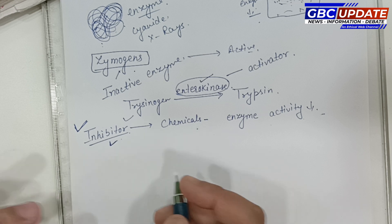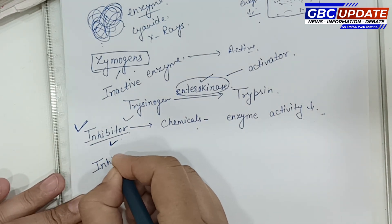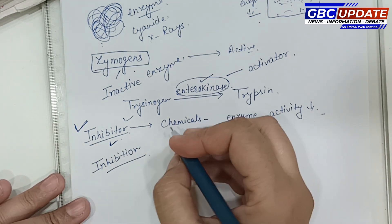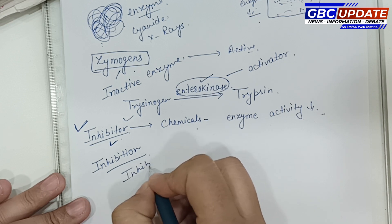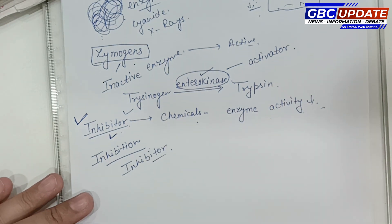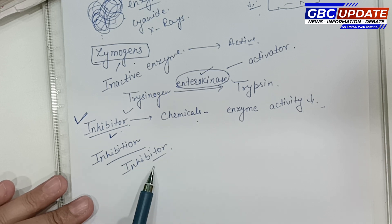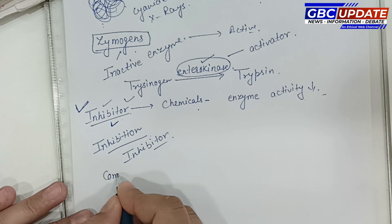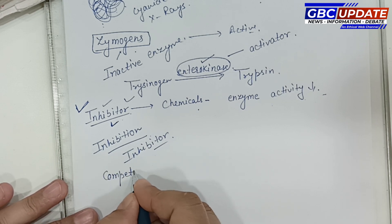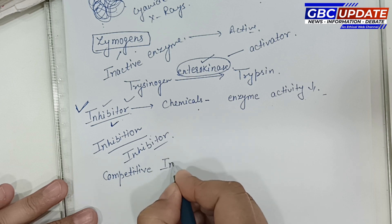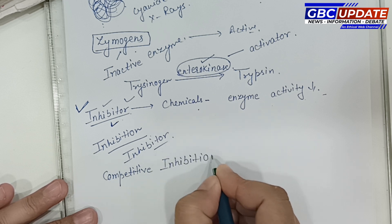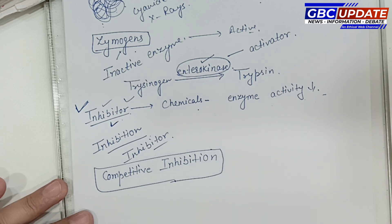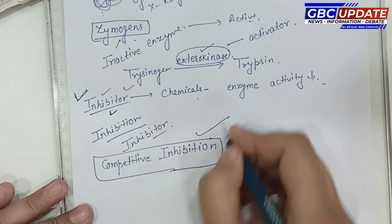The process of reducing enzymatic activity is known as inhibition, and the chemical responsible is called an inhibitor. We will now learn about competitive inhibition. Competitive inhibition means there is competition — specifically, competition at the active site of the enzyme.